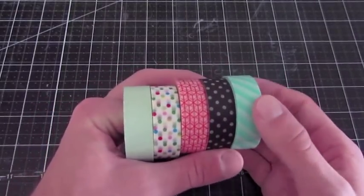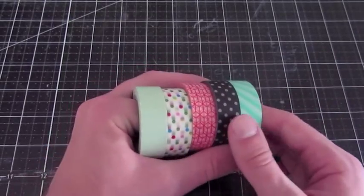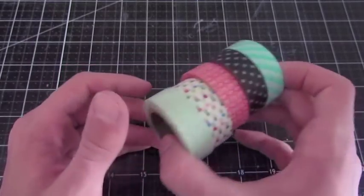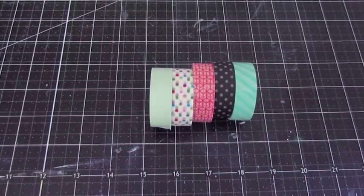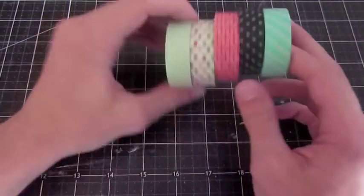And also on my blog, I will have the exact washi tapes that I'm using linked to the store, in case you want an exact one of the washi tapes that I'm using. You're going to need a total of however many tape patterns you'd like to use. I'm going to be using five for my washi tape banner today.